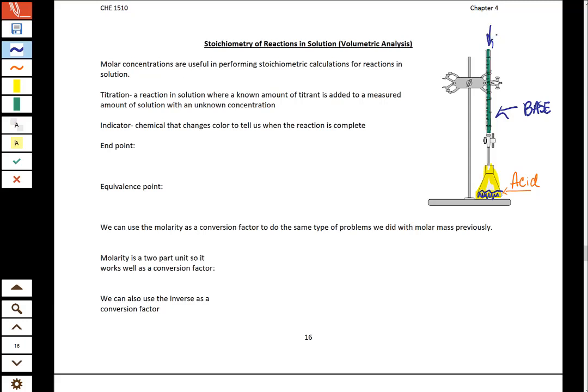And when this reaction happens we use something called a chemical indicator. We mix it in with the acid. And that chemical indicator is going to tell us when to stop titrating. And this is what's called the end point. So this is when to stop titrating.